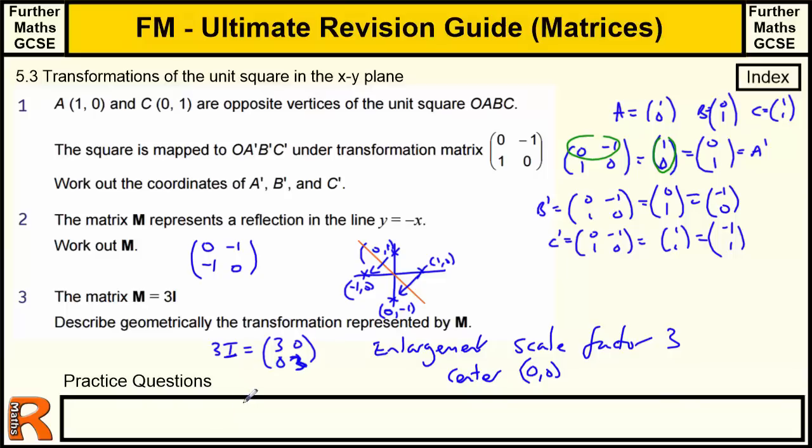So that's transformations. Once you've got the idea of the transformation just being where these two points go to, written as vectors, it does make it fairly straightforward.